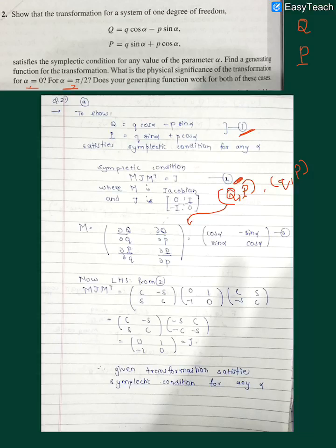Once we do the calculation, we get our M as cos alpha, minus sin alpha, sin alpha, cos alpha. We have to see if our M is satisfied by the symplectic condition where J is a very special kind of matrix in classical mechanics.